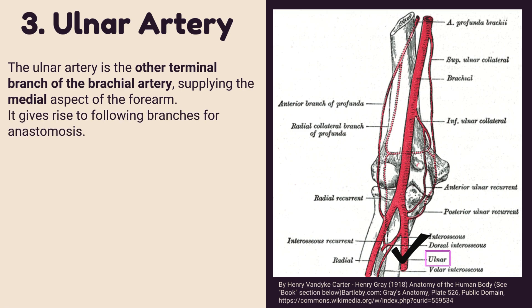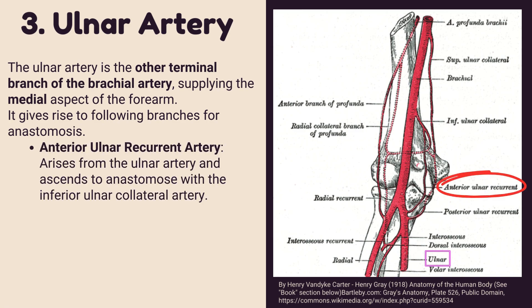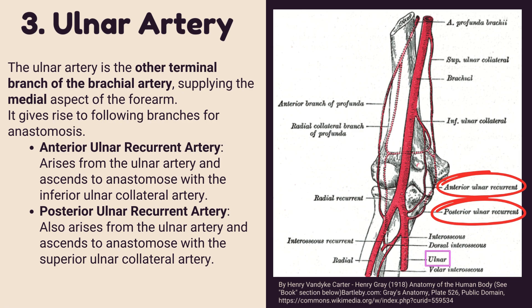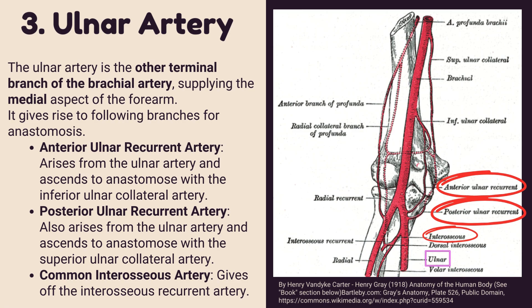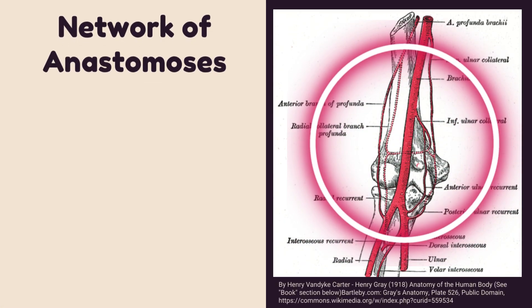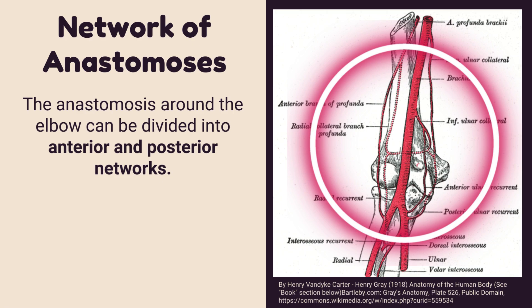The ulnar artery is the other terminal branch of the brachial artery, supplying the medial aspect of the forearm. It gives rise to the following branches: the anterior ulnar recurrent artery, which arises from the ulnar artery and ascends to anastomose with the inferior ulnar collateral artery; the posterior ulnar recurrent artery, which also arises from the ulnar artery and ascends to anastomose with the superior ulnar collateral artery; and the common interosseous artery, which gives off the interosseous recurrent artery.